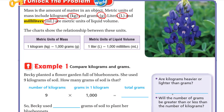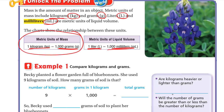The charts show the relationship between these units. For metric units of mass: one kilogram equals 1,000 grams. And for metric units of liquid volume: one liter equals 1,000 milliliters.